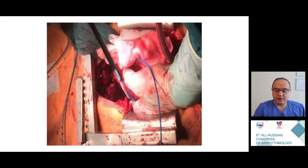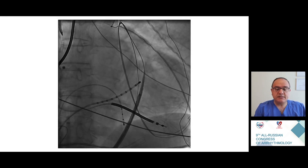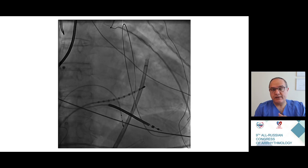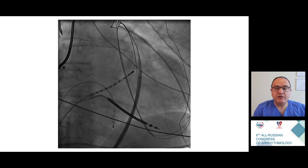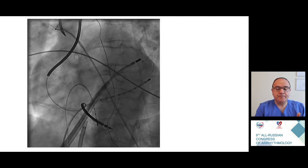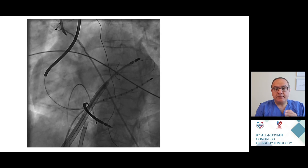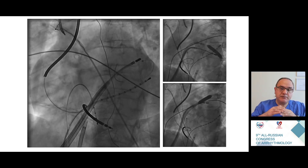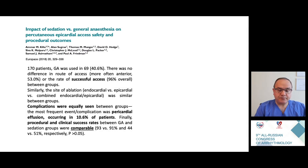Another challenge in the epicardial space is the phrenic nerve — sometimes the phrenic nerve is very close to our ablation site. In the near future, pulse field ablation will solve this, but currently using RF ablation, we can use a double-puncture technique with two guide wires and two sheaths. One sheath carries the ablation catheter and the second carries a PTA balloon, which can elevate the phrenic nerve and prevent phrenic nerve injury during epicardial ablation.